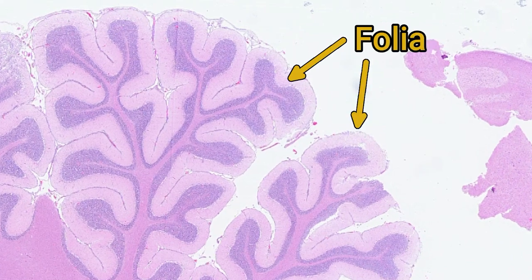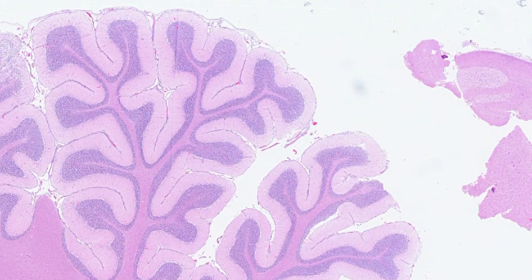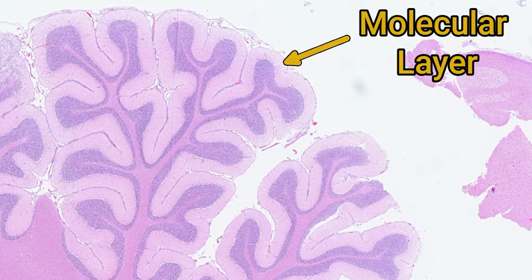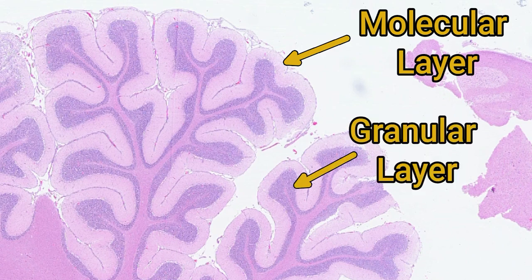The structure of the folium is based around three layers of cortex that cover the white matter core. At low power you can see two of these layers: the molecular layer, which is not very cellular and therefore pink, and the granular layer, which is very cellular and much more blue-purple.